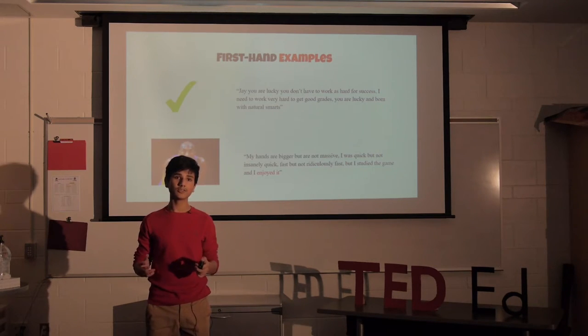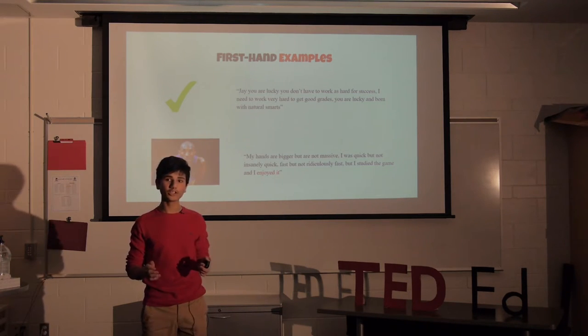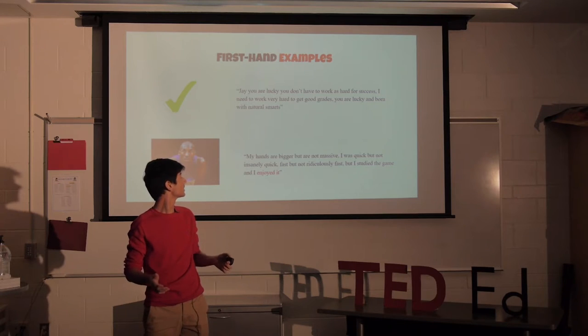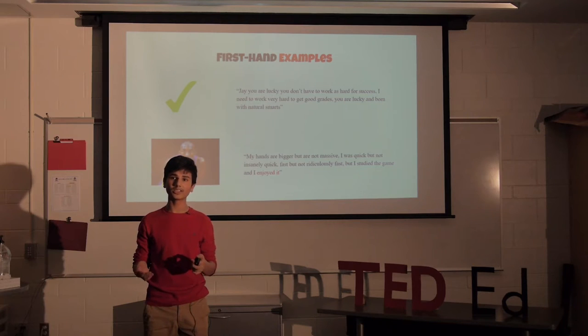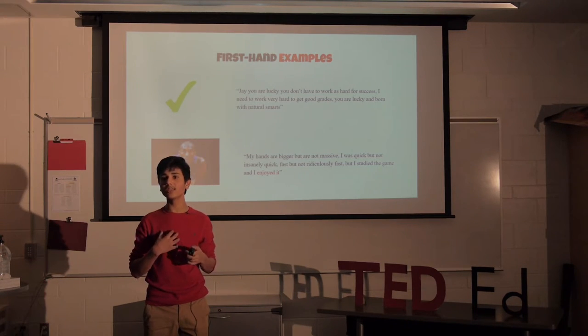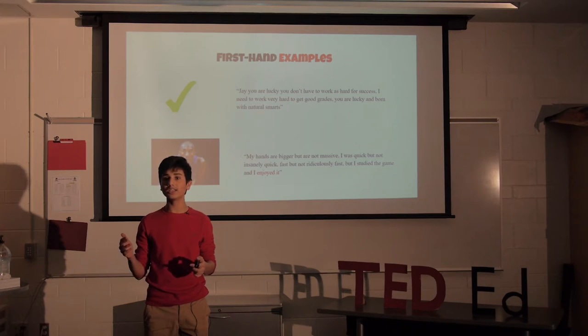Let's start with some examples. My sister is an Ivy League accepted 4.6 GPA student. However, whenever compared to me, she would always say, Jay, you are lucky. You don't have to work hard for success. I work very hard to get good grades. You are lucky and born with natural smarts. Little did I know, this is what made her so great. She had an intrinsic motivation. She knew that she is the sole cause for greatness. She knew that she could beat me just by working hard. She didn't need merit. She didn't need any other outside sources because she had herself.